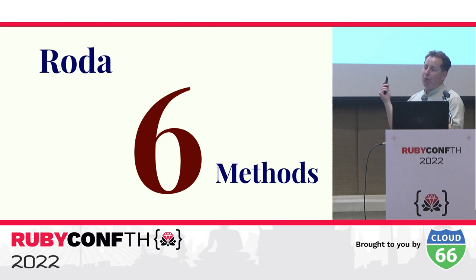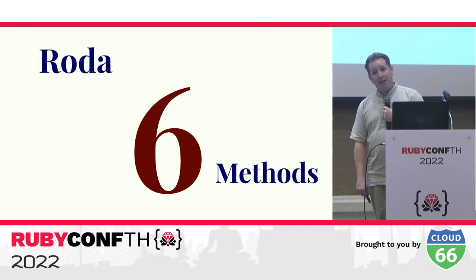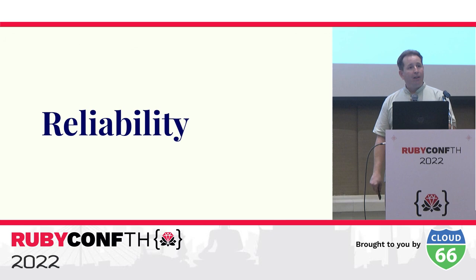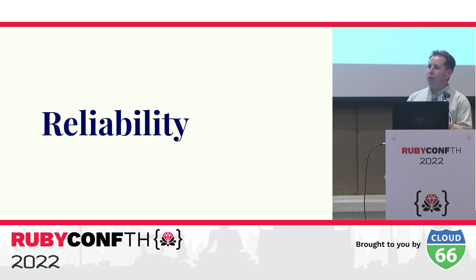Inside Roda's routing tree there are only six additional methods defined by default, which reduces the chance that you'll want to define a method that the framework uses. So those are the three approaches Roda uses to achieve high reliability: first, maintain 100% line and branch coverage; second, run frozen in production to avoid possible issues; and third, avoid polluting the execution environment with instance variables and methods that the user may want to use.